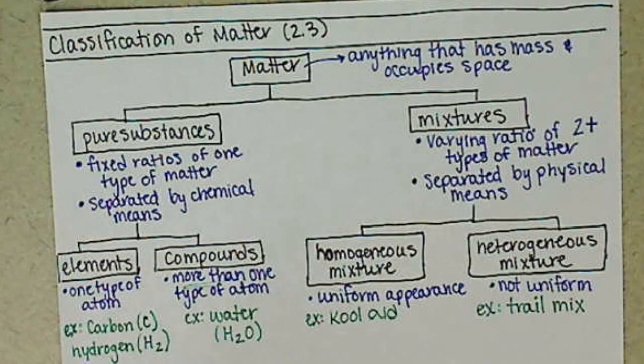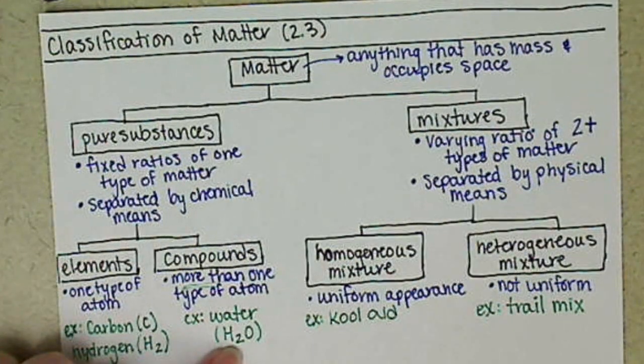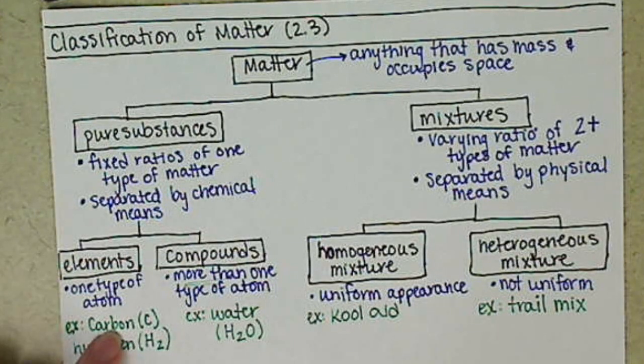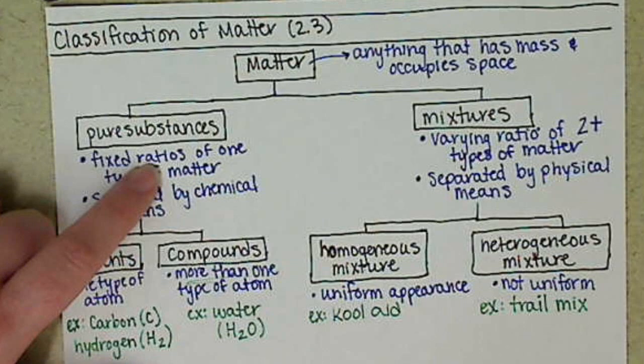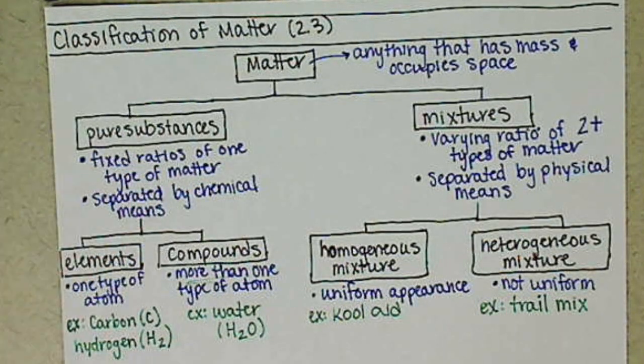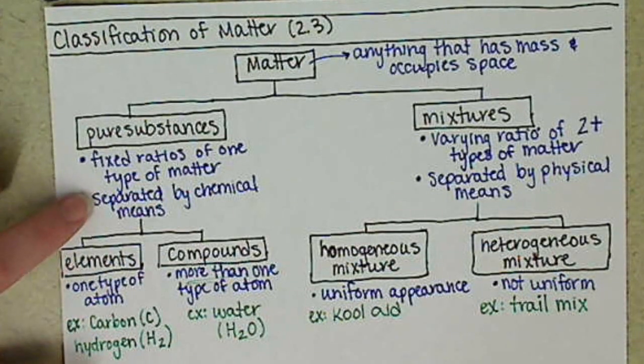Now these are both pure substances in that whenever we find water, or whenever we find hydrogen or whenever we find carbon, they are always going to be in those ratios. If we change the ratio, we change the pure substance.